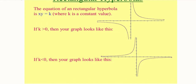There are two possibilities for this graph. If the value of k is positive, the graph will lie in the first quadrant — where both x and y are positive — and in the third quadrant, where both variables are negative. When we multiply two positive values the answer is positive, and when we multiply two negative values the answer is also positive, giving a positive k.